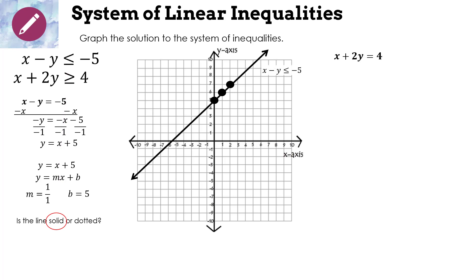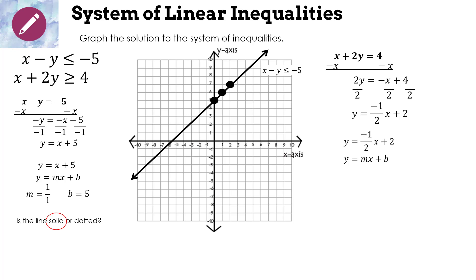For the second inequality, x + 2y = 4. Subtract x from both sides and divide by 2: y = −(1/2)x + 2. Slope = −1/2, y-intercept = 2. Graph the y-intercept at 2, then go down 1 over 2, down 1 over 2.